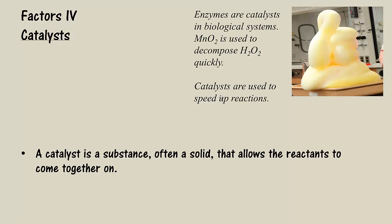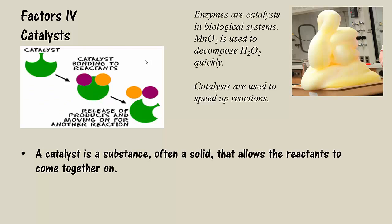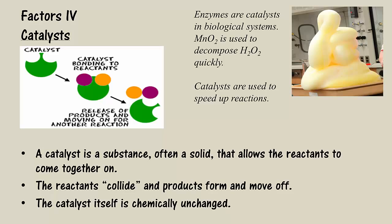A catalyst is a chemical substance, often a solid, that allows the reactants to come together on like a meeting place. So here's our catalyst, here's our reactants meeting on the surface of the catalyst. Here the reactants are able to collide, form products and move off. The catalyst itself is not chemically altered. It is not involved in the reaction, its mass does not change, it is not a reactant. It merely makes the reaction form faster. So how does it do this?